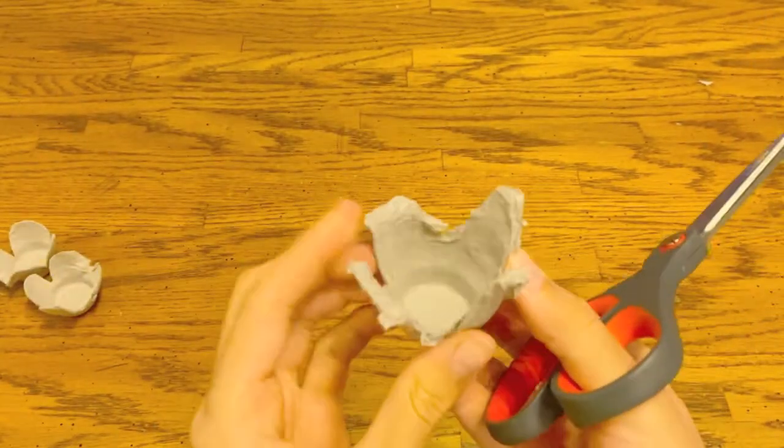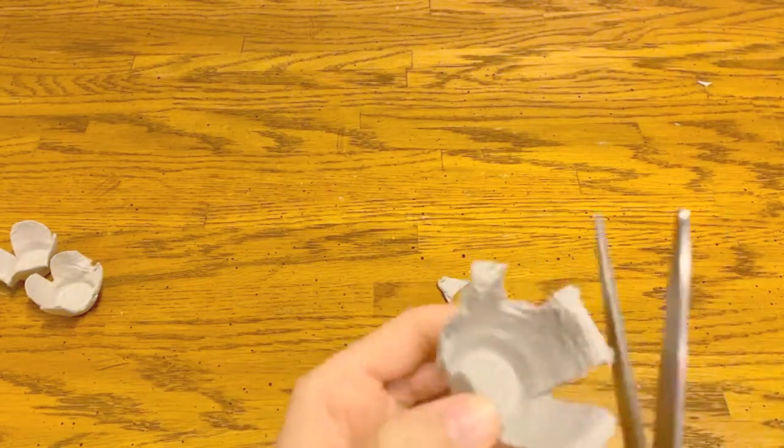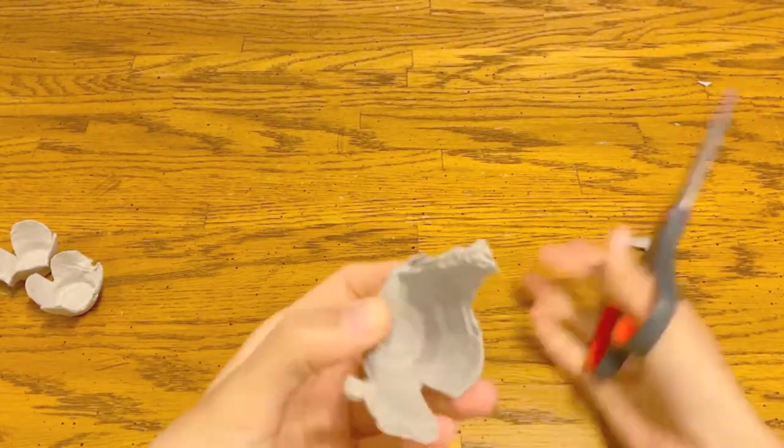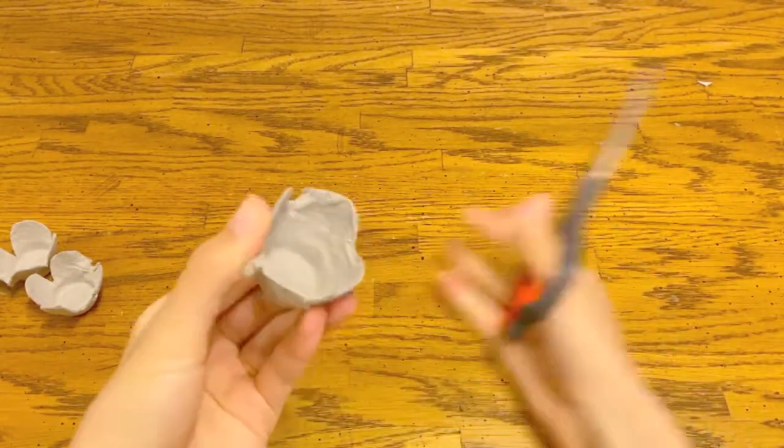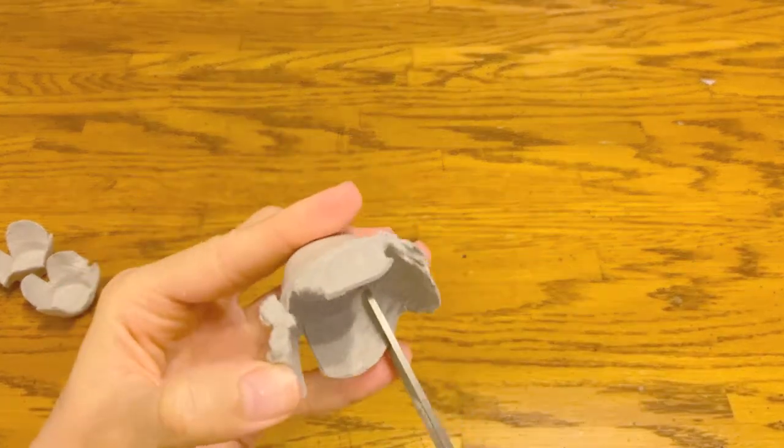Then carefully use your scissors to make those petals less pointy, a little bit more rounded. We want them to be not too tall either, as you can see here.